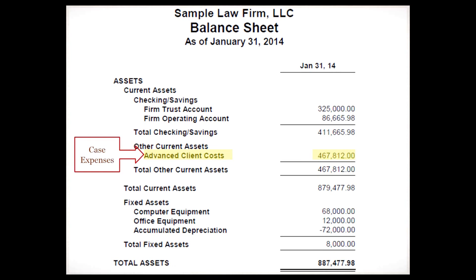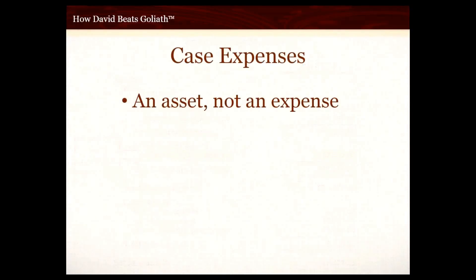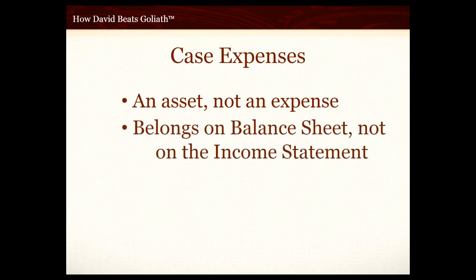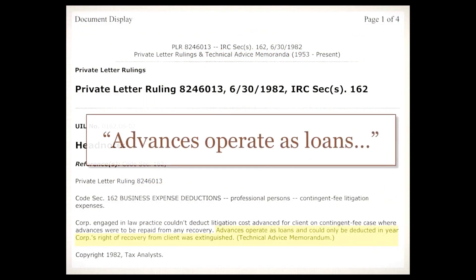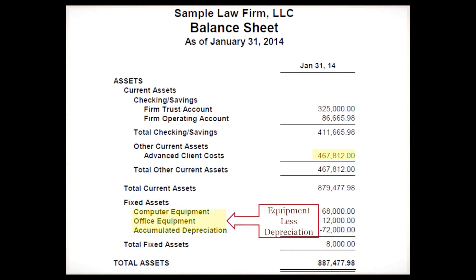There are a couple of important issues regarding case expenses. Case expenses are an asset, not an expense, and therefore belong on the balance sheet, not the income statement. You should not be expensing your case expenses — you should be booking them as an asset. That's not just my opinion; that's what the IRS says. There's a private letter ruling 8246013, which states that advances operate as loans and should not be booked as current year expenses.